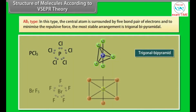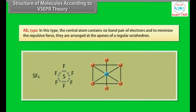In an AB5-type structure, the central atom is surrounded by five bond pair electrons, and to minimize the repulsive force, the most stable arrangement is trigonal bipyramidal. In an AB6-type structure, the central atom contains six bond pair electrons, and to minimize the repulsive force, they are arranged at the apexes of a regular octahedron.